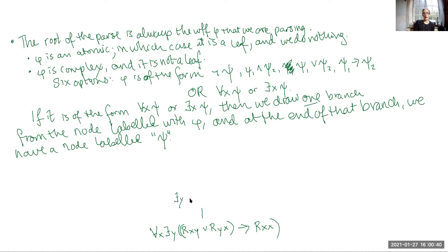The first connective that we have is the quantifier. So we draw one branch up, remove that connective, and write down what is left. So there is a y, r x y, or r y x implies r x x.